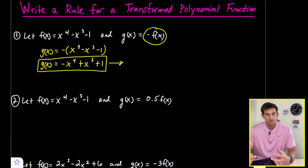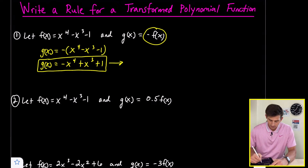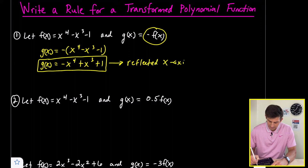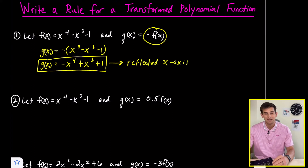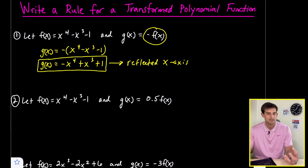What happened here is we made f of x opposite, so we had a reflection over the x-axis. We didn't make x opposite — that would be a y-axis reflection. We made the entire function opposite, so that's an x-axis reflection.